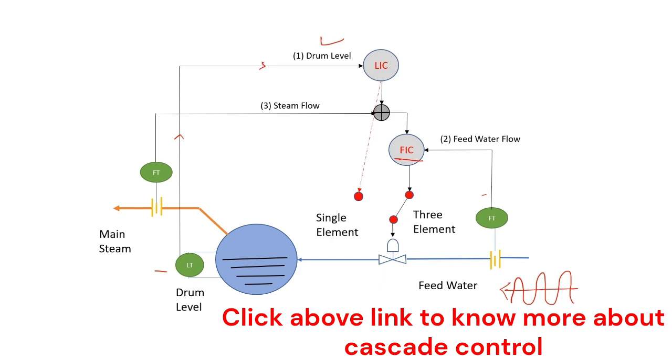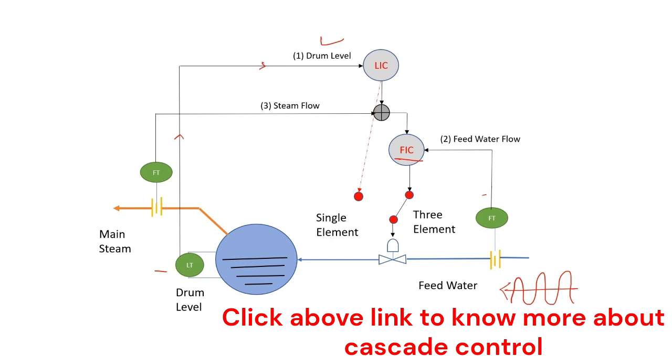Now there is another parameter, the main steam flow. Normally this main steam is connected to the grid, and there are sudden fluctuations that may happen in the load of the main steam, and this affects the boiler drum level.